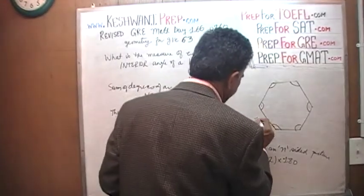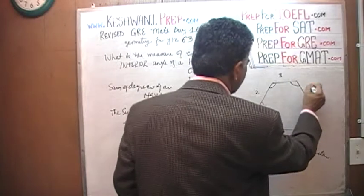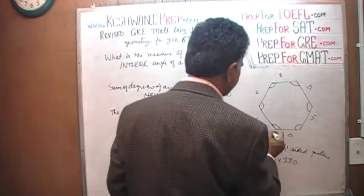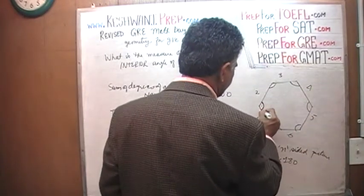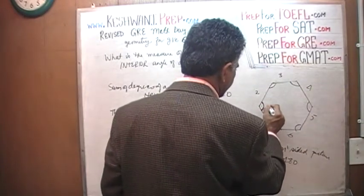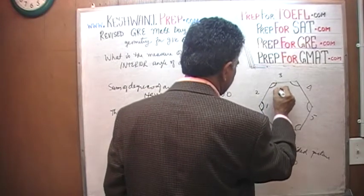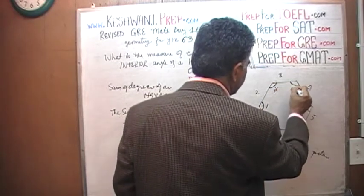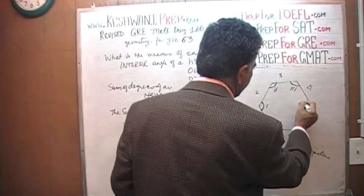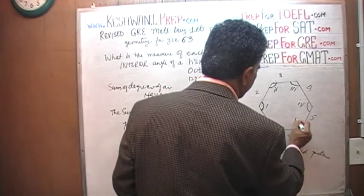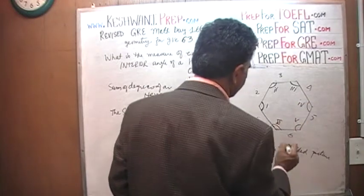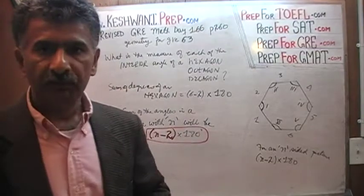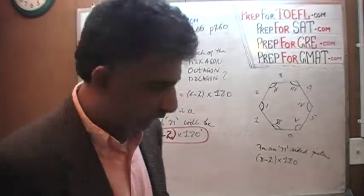Let's number them: one, two, three, four, five, and six. There are six sides. When you connect two sides, you get the first angle, then angle two, then angle three. When you connect side three and four, you get angle four and angle five, and finally angle six. Six sides will form six interior angles.